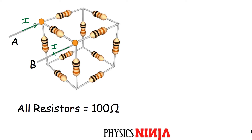The first thing to consider: imagine the current entering at A. Because it's a cube and all resistors have the same value R, whatever flows down one side is probably the same as what flows down the other side. I'll call both of those I1 — that's because of the symmetry of the cube. There's no difference between the top branch versus the bottom branch; the cube looks exactly identical from those two perspectives.